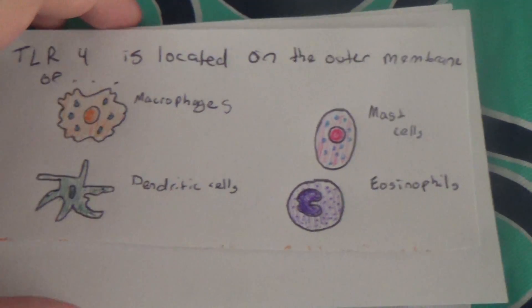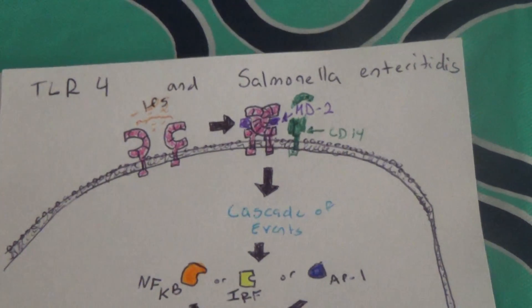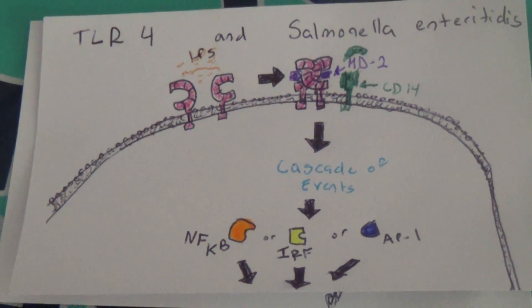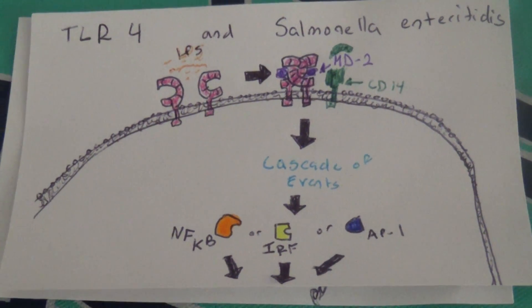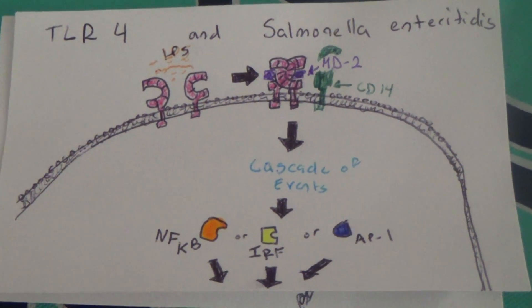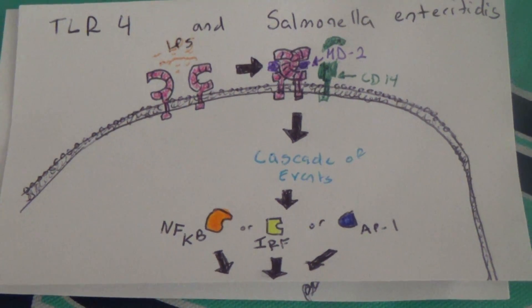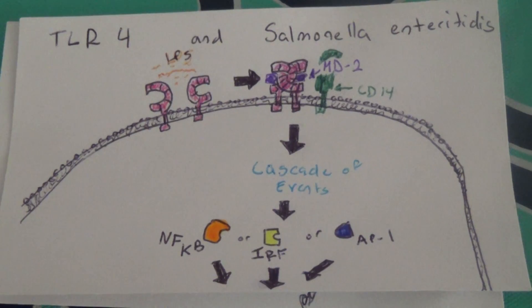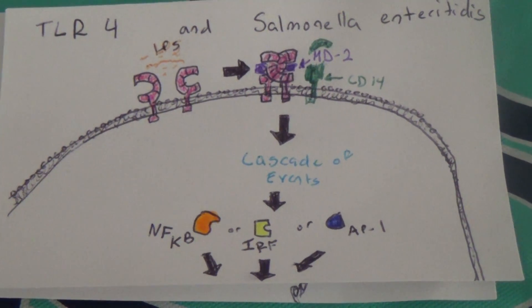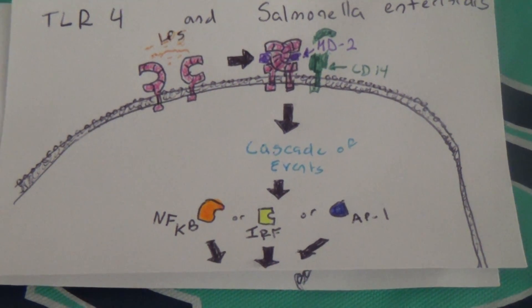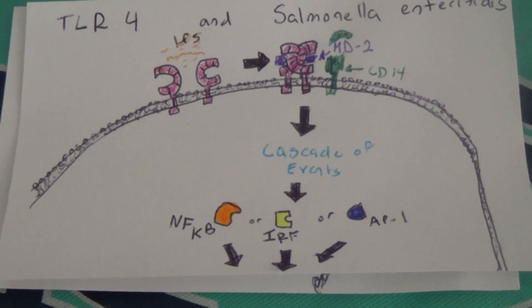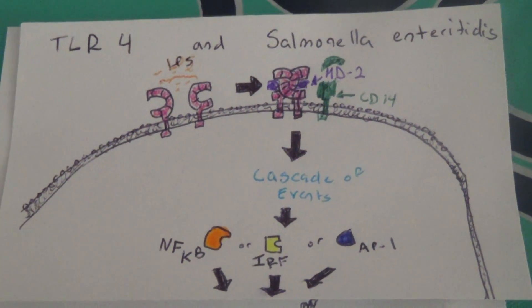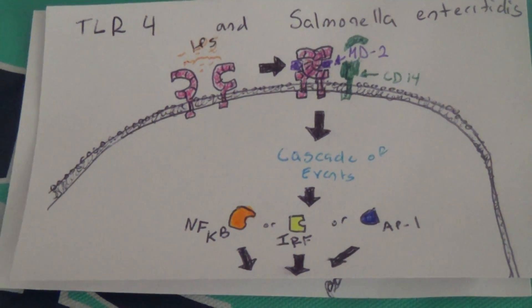So what happens when your body interacts with a gram-negative bacteria such as Salmonella enteritidis? Salmonella enteritidis is a gram-negative bacteria that is responsible for food poisoning. When it enters the body, it becomes degraded and TLR4 will sense these broken components of LPS.